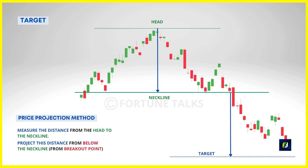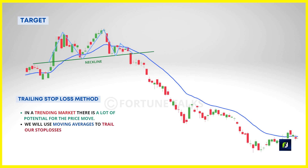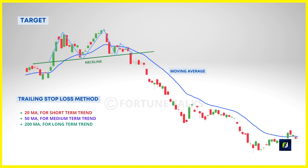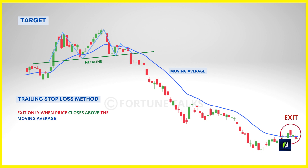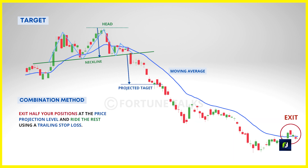The price projection is a classical charting technique that determines where the move might end, focusing on price exhaustion. The idea is that prices will move a distance equal to the highest width of the pattern — from the neckline to the head. Measure the width from the head to the neckline and project this distance from the neckline towards the downside. The second method is trailing your stop loss to ride big trends, using moving averages: a 20-period MA for short-term trends, 50-period for medium-term, and 100 or 200-period for long-term. Ride the trend until the price moves above the trailing stop loss.